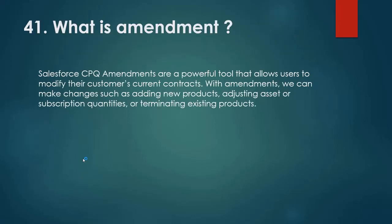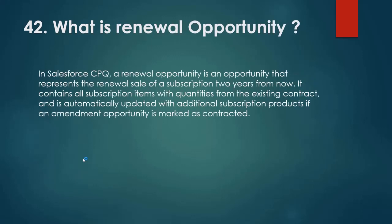What are amendments in Salesforce CPQ? Amendments are a powerful tool that allows users to modify their customers' current contracts. With amendments we can make changes such as adding new products, adjusting asset or subscription quantities, or terminating existing products. What is a renewable opportunity in Salesforce CPQ? A renewable opportunity is an opportunity that represents the renewable sale of a subscription. It contains all subscription items with quantities from the existing contract and is automatically updated with additional subscription products if an amendment opportunity is marked as contracted.